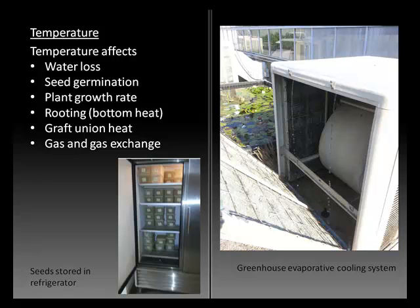Rooting is promoted by warmer soil temperatures, and measures taken to encourage strong root growth include bottom heating — wires located in the greenhouse bench that give plants the heat needed to promote optimal rooting. In some instances, the union of grafted tissue is promoted by applying heat only at the graft location, leaving the rest of the plant cooler so it remains dormant. Temperature is also critical in gas exchange in plant leaves.